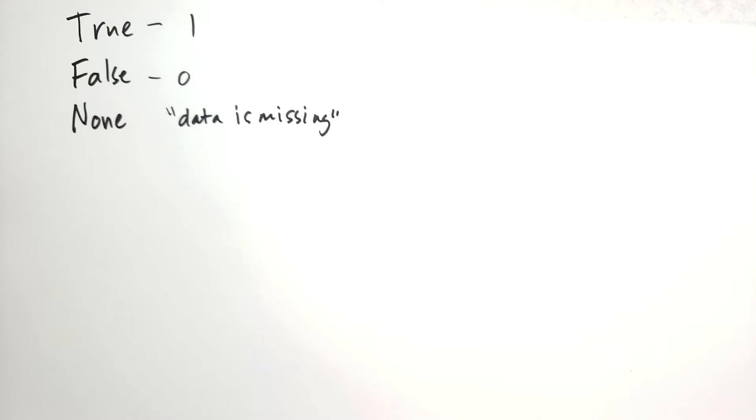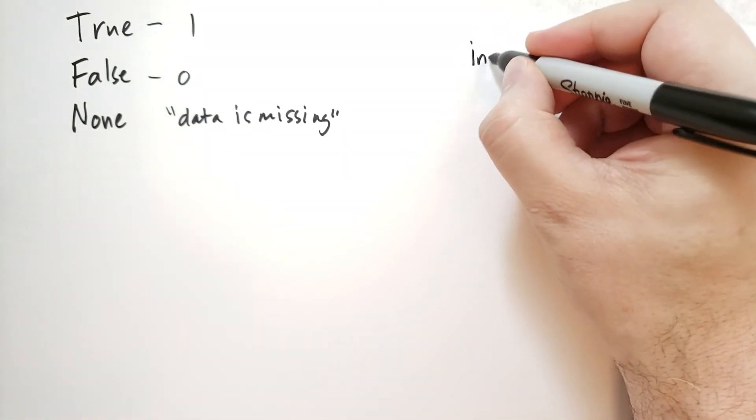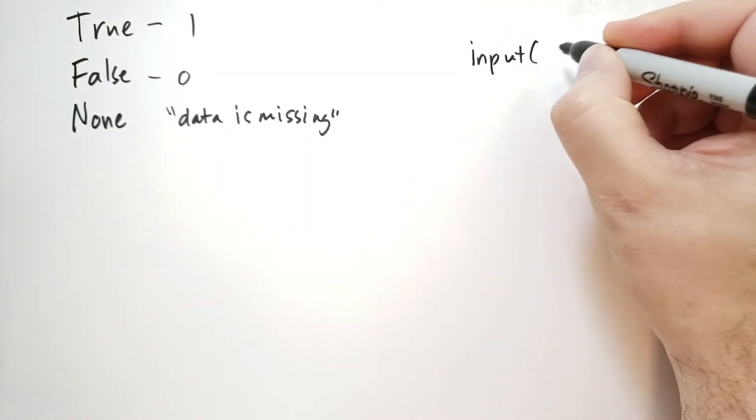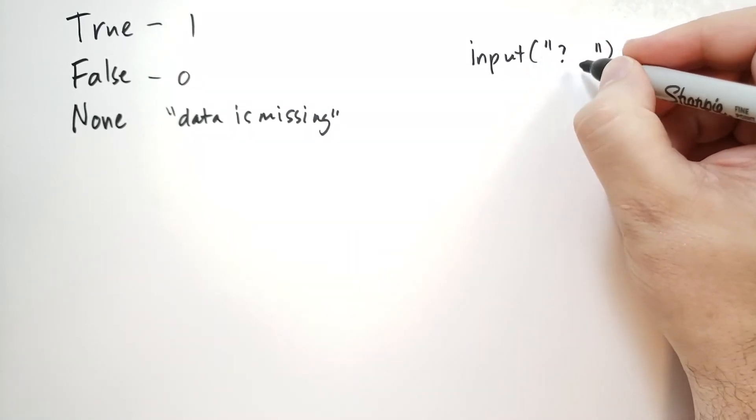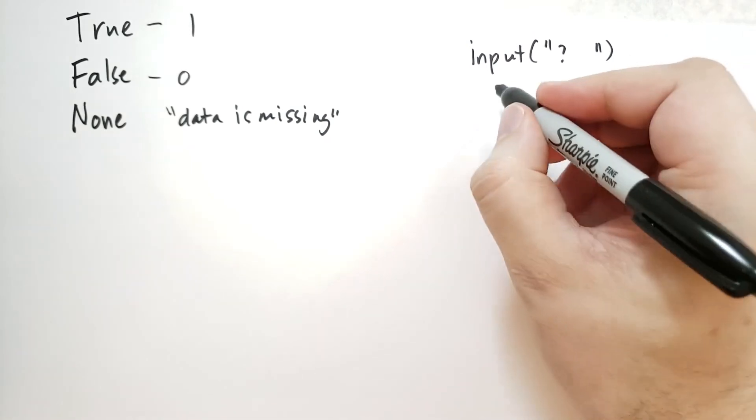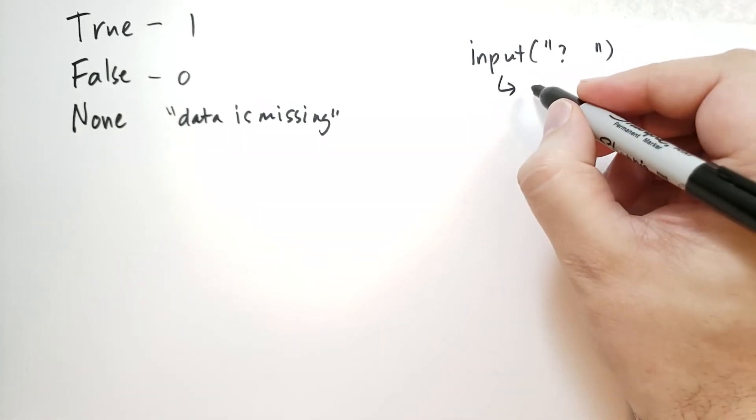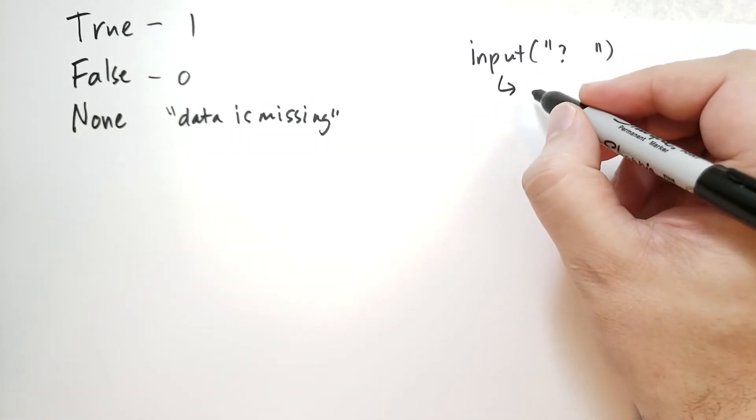Let's do an example. I'm going to actually introduce a new function, it's called input. And if you put input, and then I'm just going to say this. So double quote, question mark, space, question mark, quote. What this will do is it will ask the user for some input, and then return the input as a value.